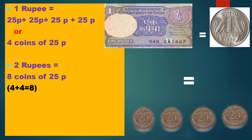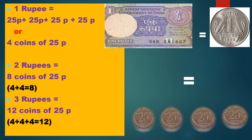Now tell me, how many coins of 25 paise will make 3 rupees? Correct. 4 plus 4 plus 4, that makes 12. So 12 coins of 25 paise will make 3 rupees.